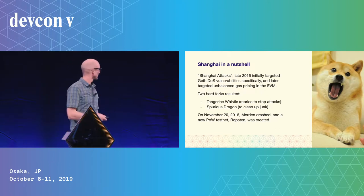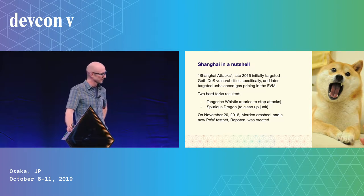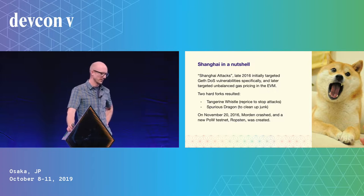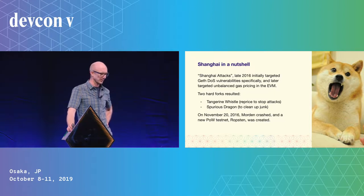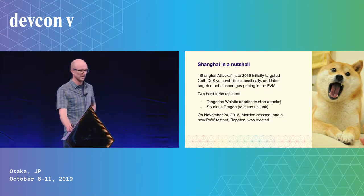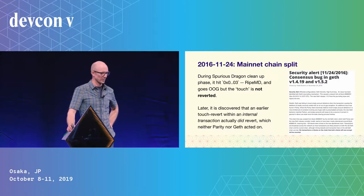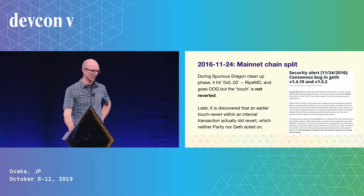Moving to the EVM section — the Shanghai attacks caused a month of denial of service attacks due to suboptimal client implementations and gas mispricings. Two hard forks followed, and there was a mainnet chain split because of how reversion was implemented.